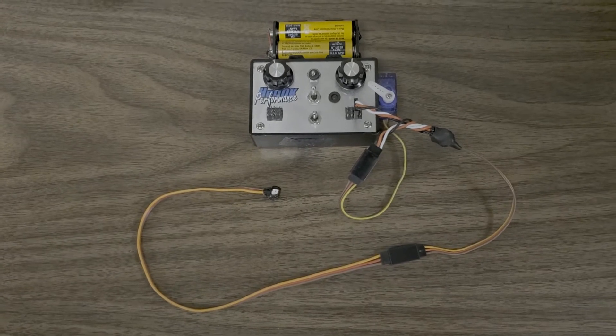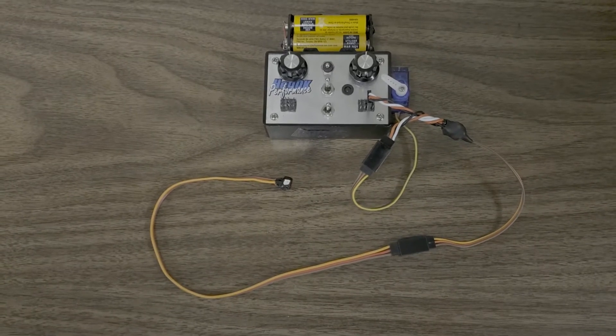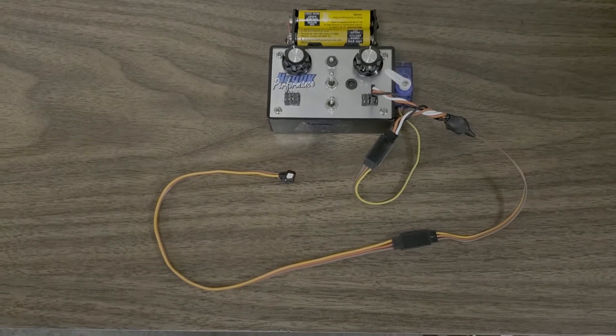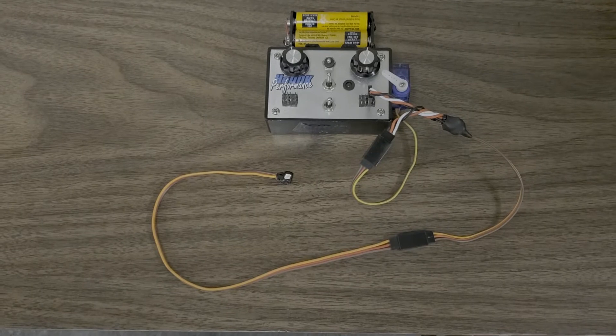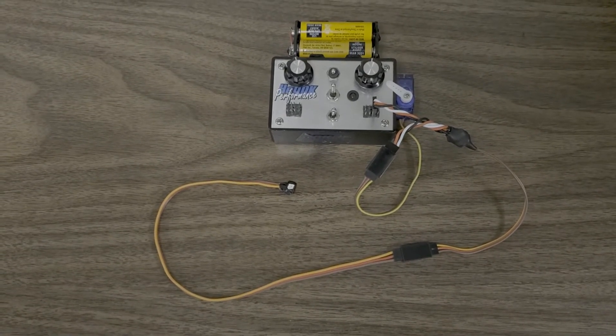This is Al. So what you're looking at is an RGB LED that's connected to a controller that's meant to go in between your receiver and either your speed control or your steering servo.